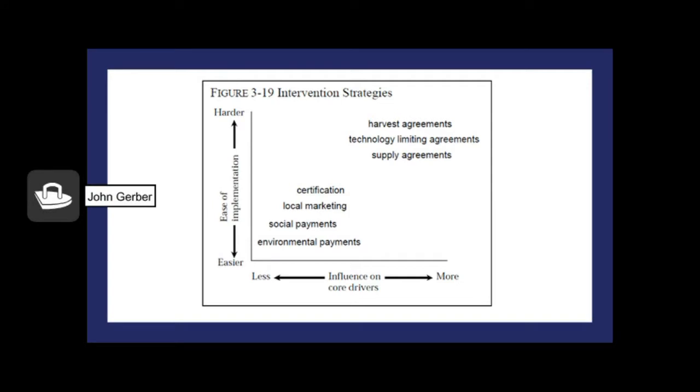But none of these structures are easy to build. In this diagram, we talk about on the left-hand side, the ease of implementation goes from easier up to harder. The more difficult things to implement are at the top of the page. On the bottom, the influence on the core drivers of the commodity system move from less to more. So on the right-hand side, you have more impact.